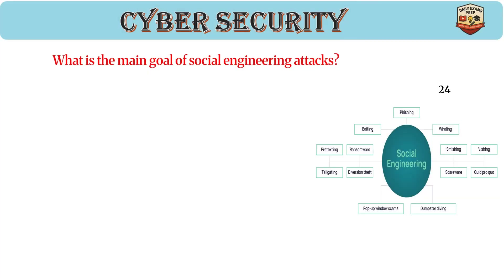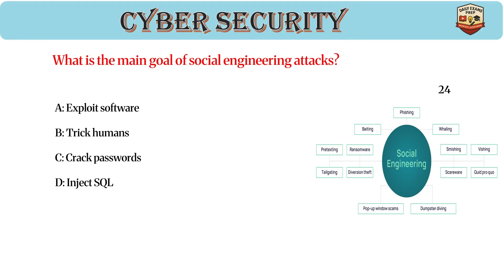What is the main goal of social engineering attacks? Answer: B, trick humans. Social engineering manipulates people into revealing information. Common methods include phishing and pretexting, relying on psychological manipulation.